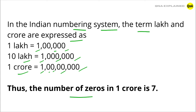Thus, the number of zeros in one crore is seven. So, there are seven zeros in one crore.